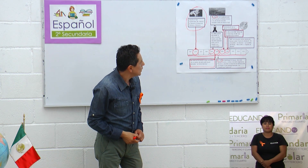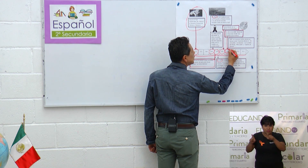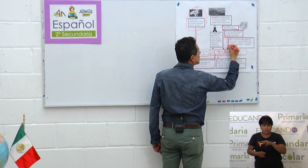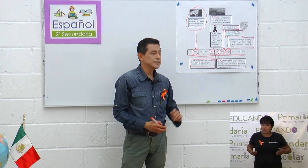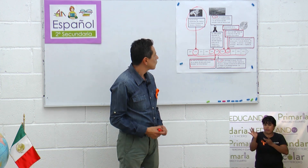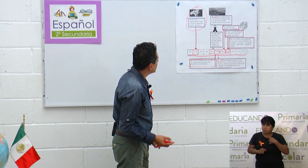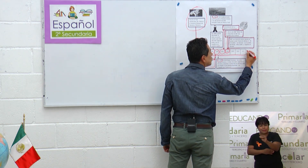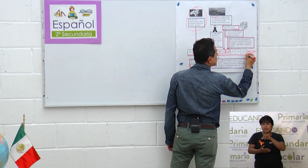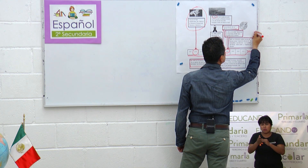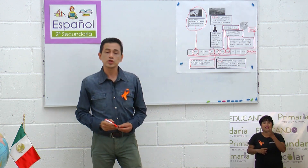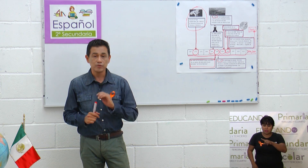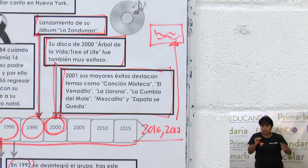También en la misma década, en el 2001, consideré que ella empieza a tener todos estos éxitos como Canción Mixteca, La Llorona, La Cumbia del Mole, señalados a partir de un nodo y una flecha. Ustedes pueden seguir incluyendo fechas como 2016, 2017, donde pudiera incluirse que sacó un nuevo álbum. Es así como ustedes pueden empezar a sintetizar la información, a jerarquizarla y plasmarla de manera visual. Esa es la función de una línea de tiempo.